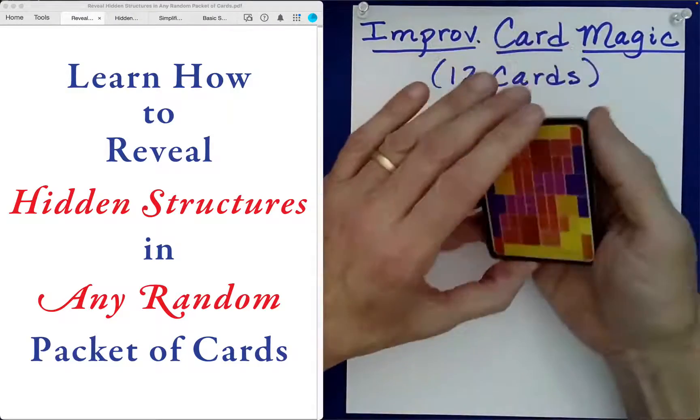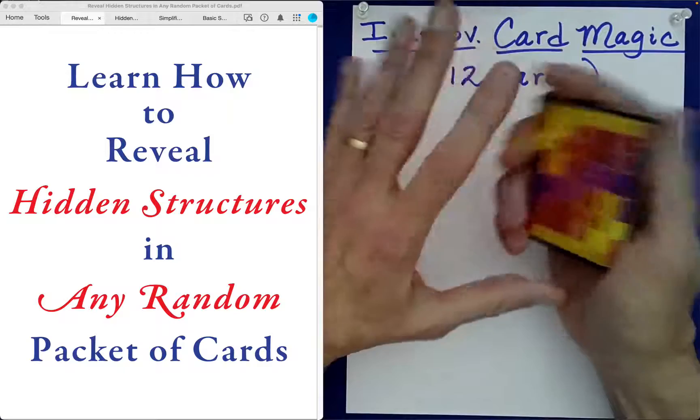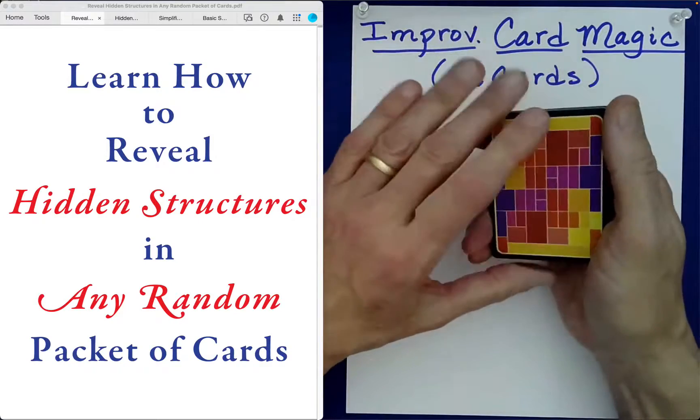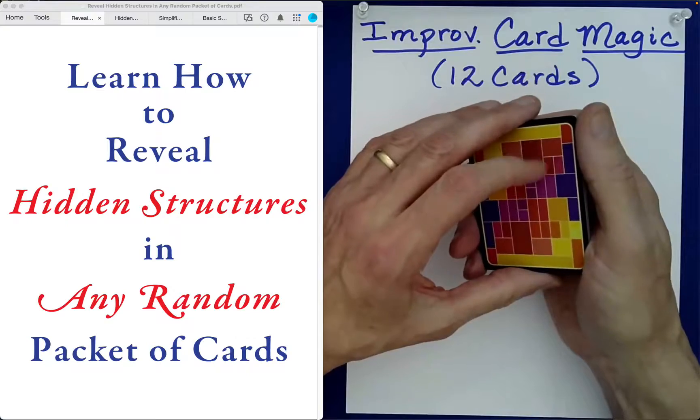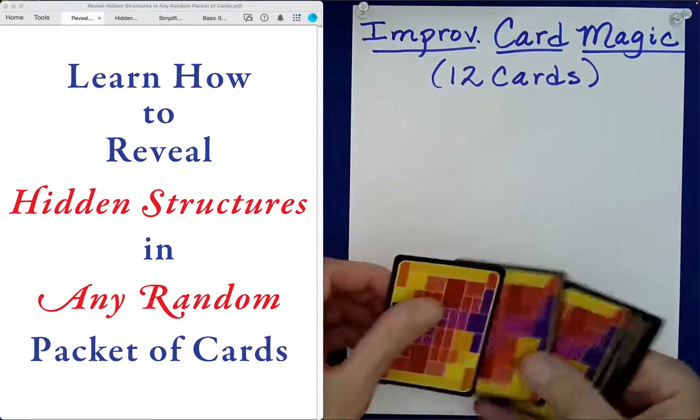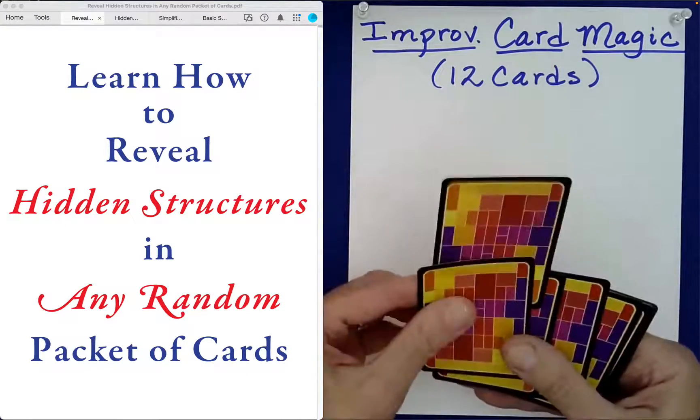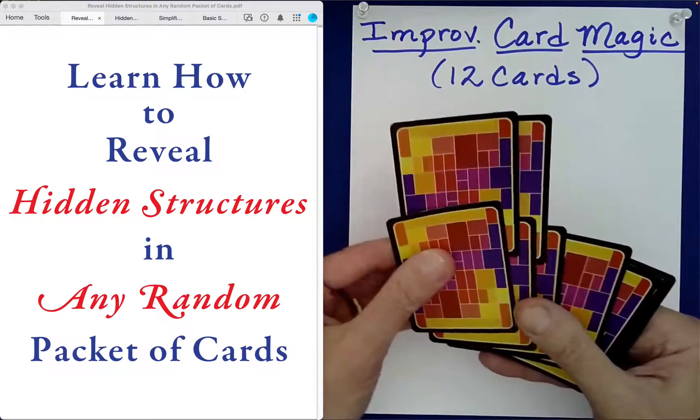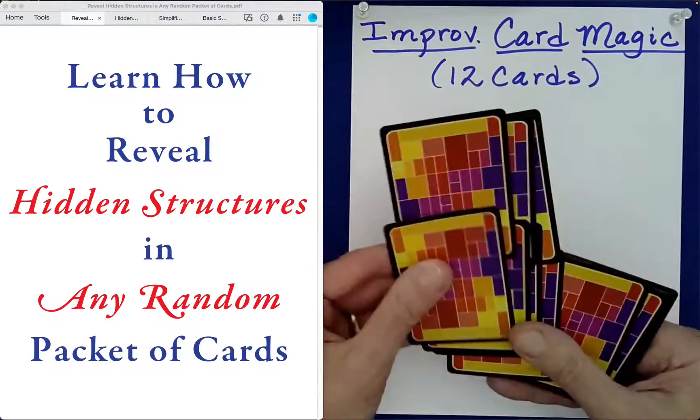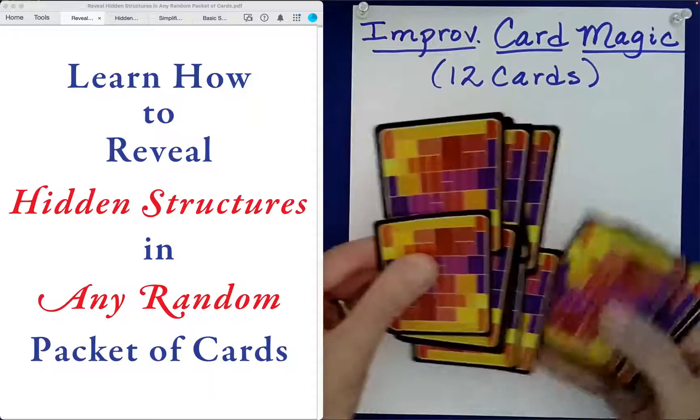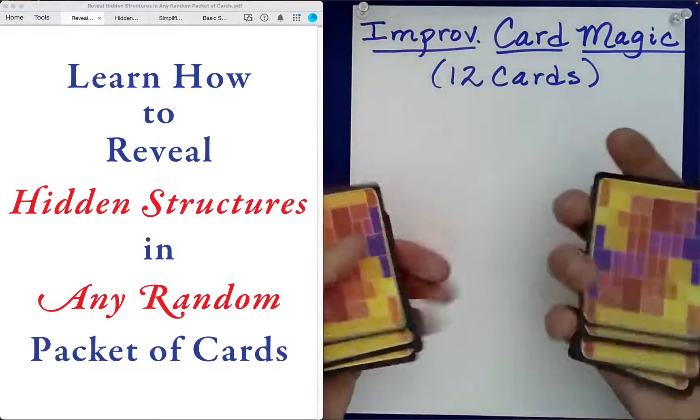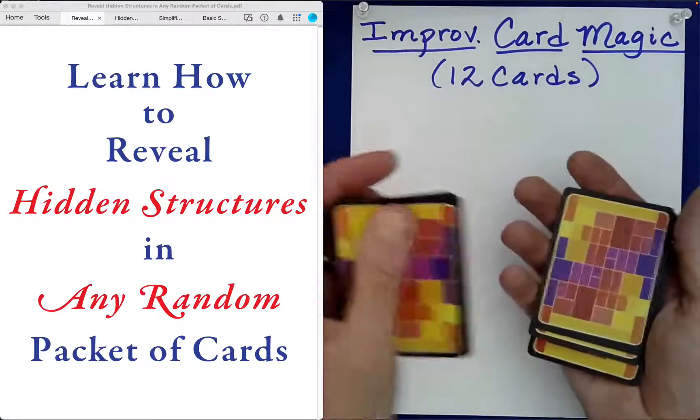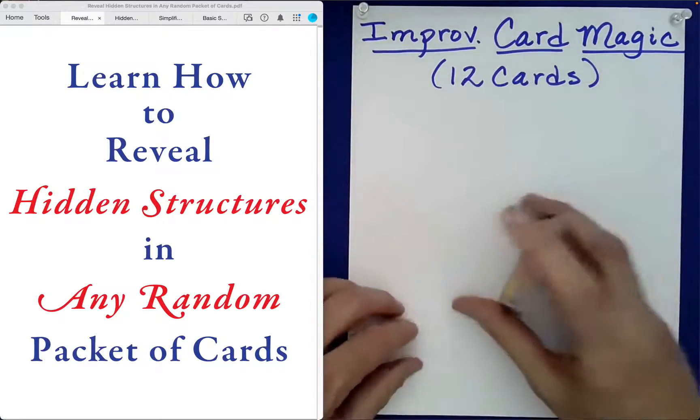We can also do something called an up jog. It's kind of a fun one to learn. Would you like to do an even or odd up jog? Even. Well what that means is you push forward, you jog up the even position cards just like this. And then you just strip those out. How would you like these stacked? Left on right? Very good.